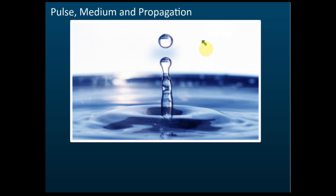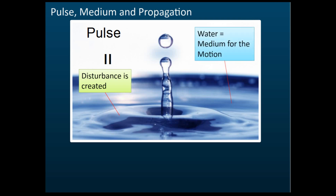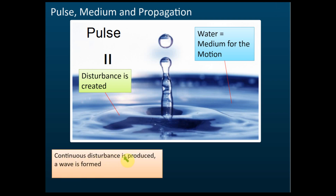Let's talk about pulse, medium, and propagation. If you drop something into water, it will produce a disturbance. This disturbance is called a pulse. If you have just one disturbance, it is a pulse, but if you have a continuous disturbance, it is called a wave. The water is called the medium for the motion of the pulse. So a wave is a continuous disturbance.